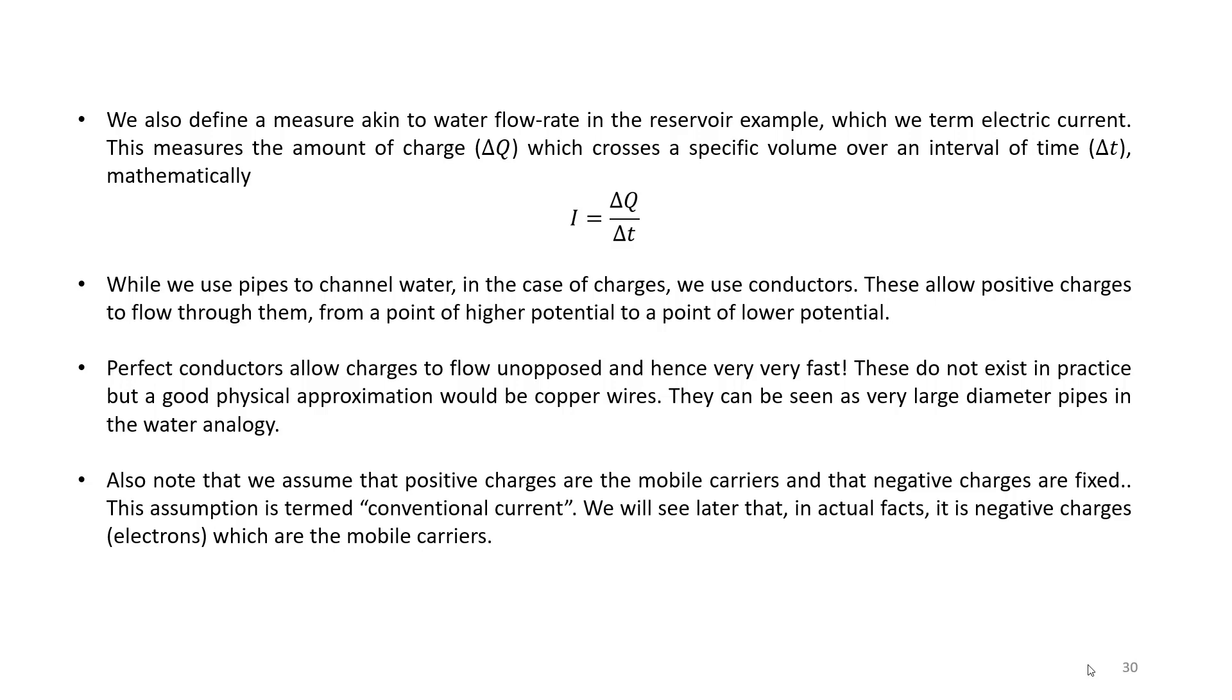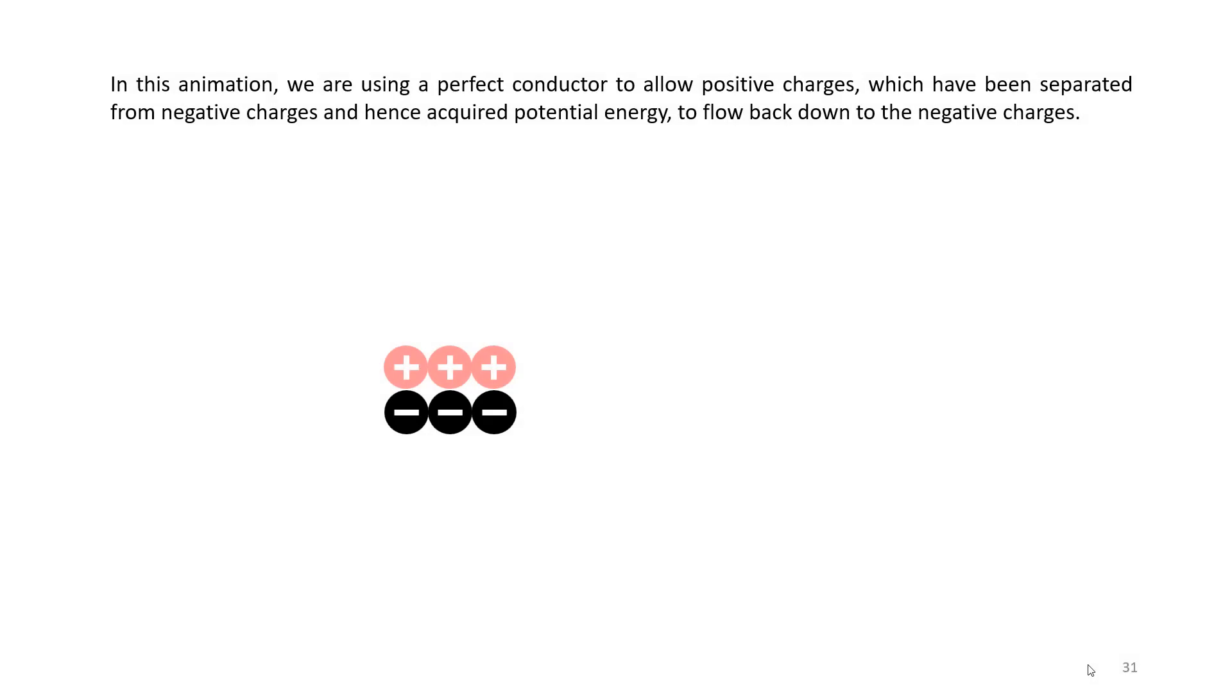However, these do not exist in practice, and any conductor will be characterized by a parameter called conductance, which will set a top limit for the current that can flow through it. Good conductors, for example, are copper and gold. So suppose that we have a bunch of positive and negative charges stuck together, and then we do some work to separate them and hence we give our positive charges some potential energy delta V.